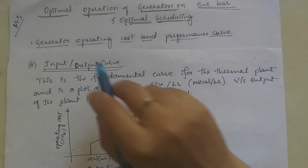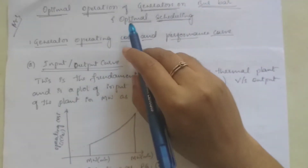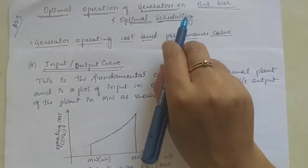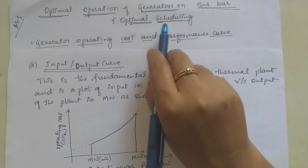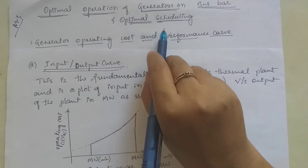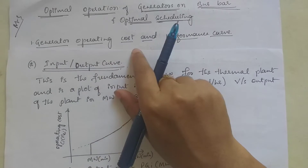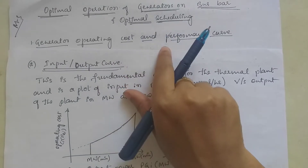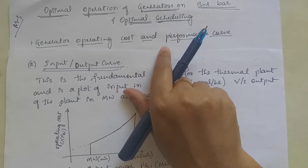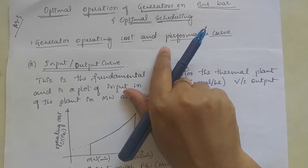Hello students, this is module 3: optimal operation of the generators on bus bar and optimal scheduling. The first topic is generator operating cost and performance curve. The generator operating cost not only includes fuel cost, it also includes labor as well as maintenance cost.